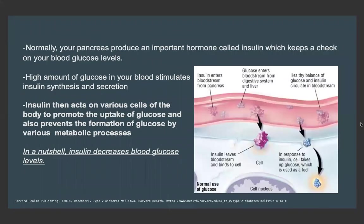Normally, our body produces an important hormone named insulin which keeps a check on our blood glucose levels. High amounts of glucose in our blood — for example after a high carbohydrate diet — stimulates the synthesis and secretion of insulin. This insulin then acts on various cells of our body to promote the uptake of glucose and also prevents the formation of glucose by various metabolic processes such as gluconeogenesis.